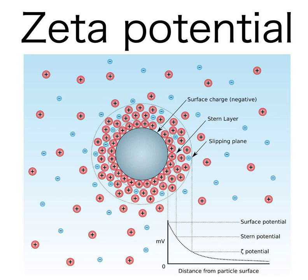Measurement. Some new instrumentation techniques exist that allow zeta potential to be measured. The zeta potential analyzer can measure solid, fibers, or powdered material. The motor found in the instrument creates an oscillating flow of electrolyte solution through the sample. Several sensors in the instrument monitor other factors, so the software attached is able to do calculations to find the zeta potential.